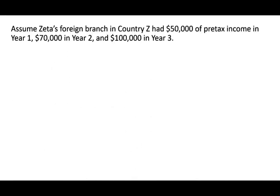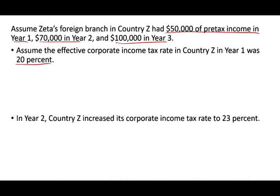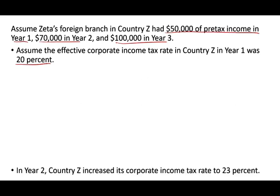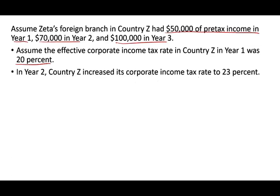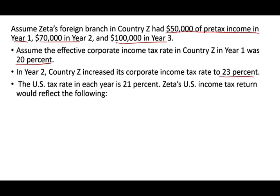Here's an example. Assume Z Company's foreign branch in country Z has $50,000 pre-tax income in year one, $70,000 in year two, and $100,000 in year three — so three years of taxable income. The effective income tax rate in country Z in year one was 20%, which is less than 21% — the U.S. tax rate. In year two, country Z increased their corporate income tax rate to 23%, which is more than the U.S. corporate tax rate of 21%. The U.S. tax rate in each year is 21%.